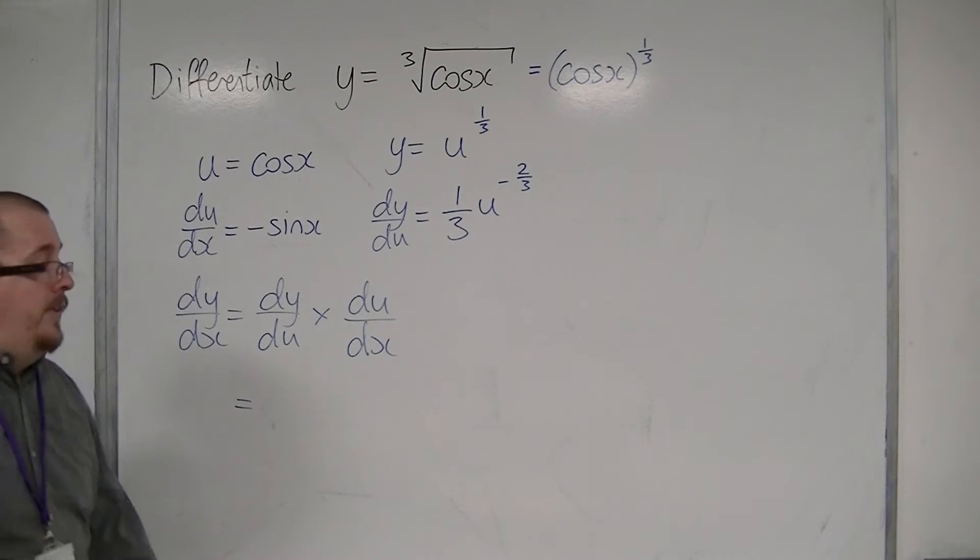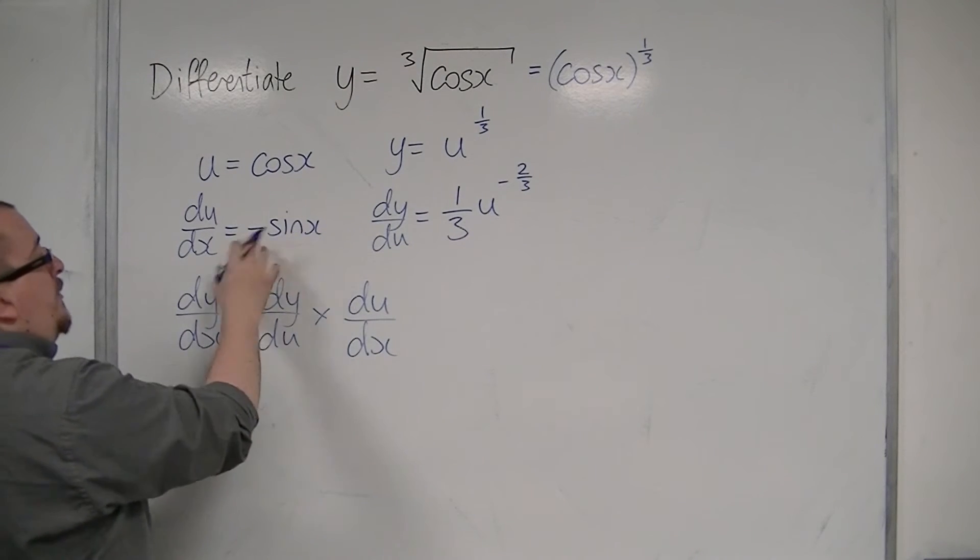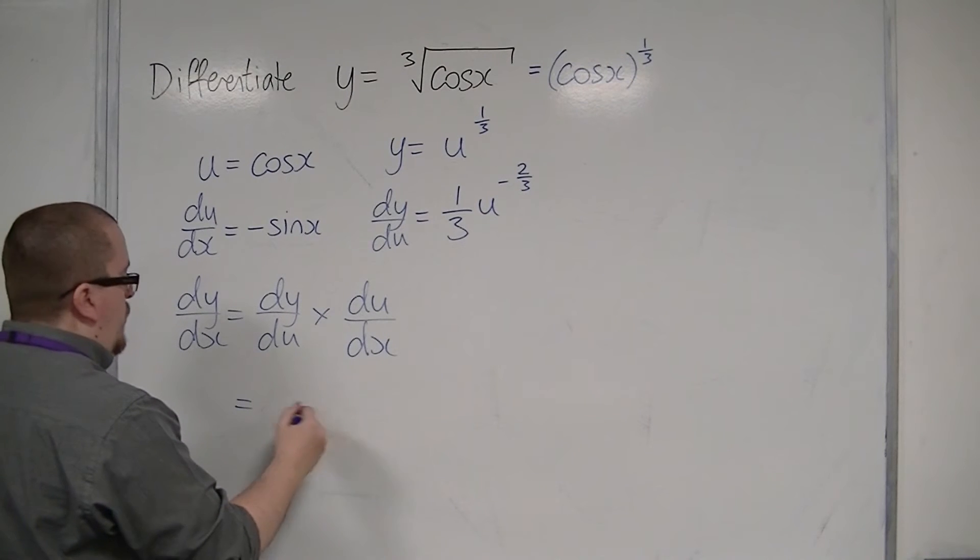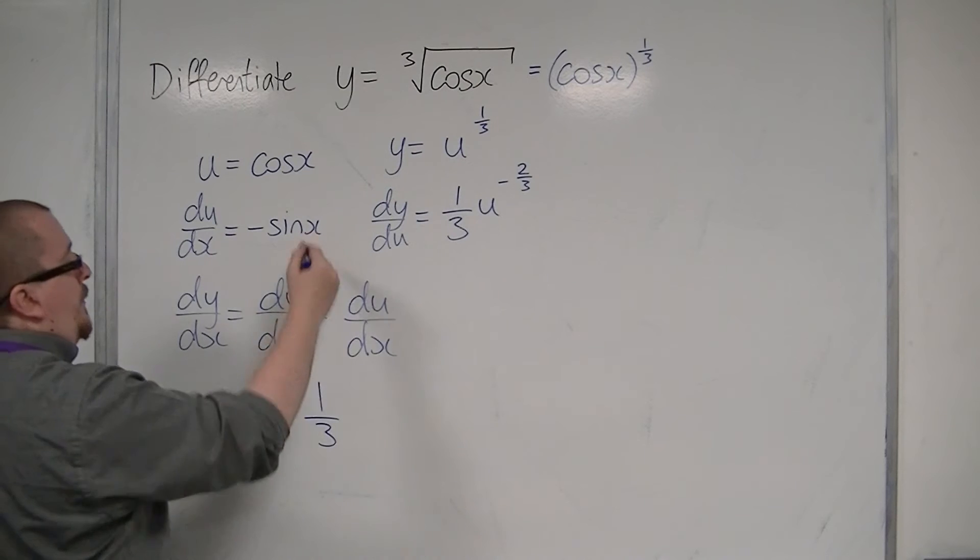dy/dx is dy/du times du/dx. So we can see we have a minus sign there, so we've got minus one third, we've got the sine x,